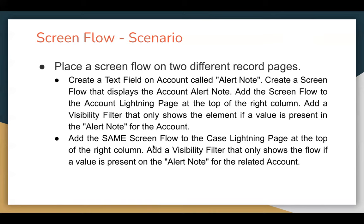The second requirement says: add the same ScreenFlow to the case Lightning page at the top of the right column. Add a visibility filter that only shows the flow if a value is present on the alert note for the related account. So the case should be related to a particular account. If that account's alert note field has some value, then only that flow should be visible on the case record page. The alert note field will be available on the account object only — we don't need to create it on case. Let's implement this.